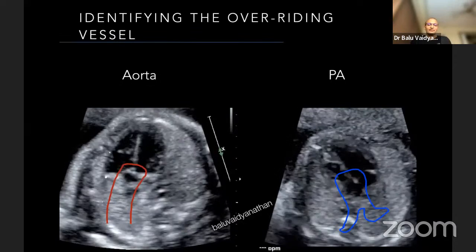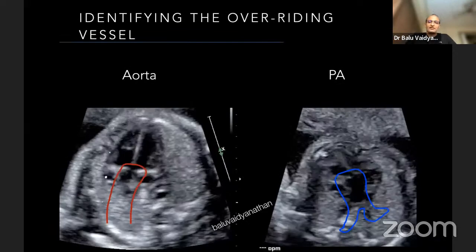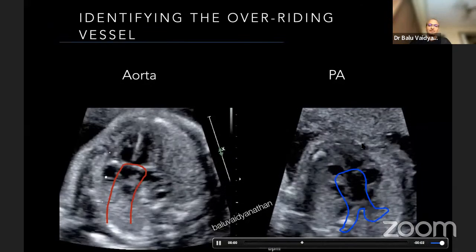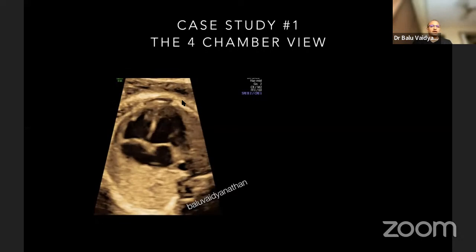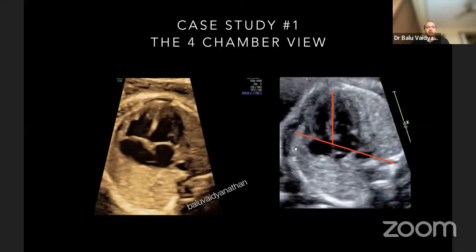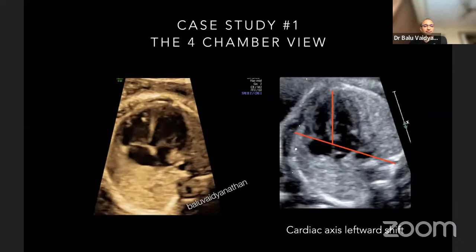If you look carefully at the second picture, you see that there is even ventricular inversion — the left ventricle seems to be on the right side here, so we'll come to that a little later. It is important to identify the overriding vessel. The most common lesion: you have a normal-looking four chamber view, but when you look at the cardiac axis, you find there is a leftward shift of the cardiac axis, even though the first glance of the four chamber view looked normal.